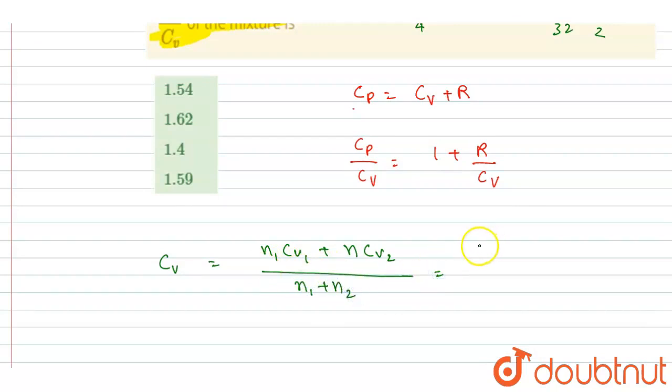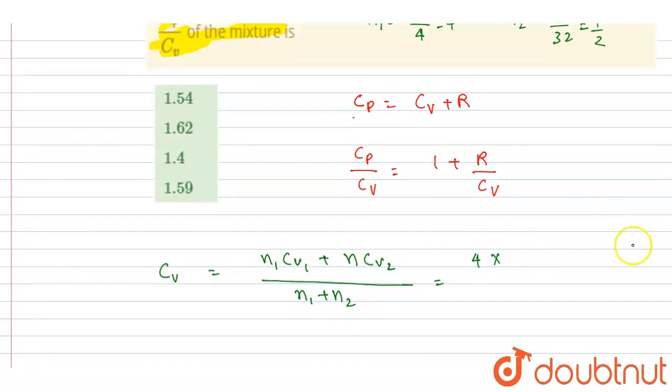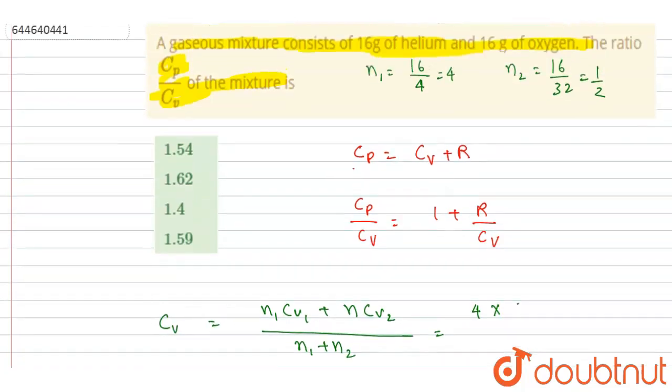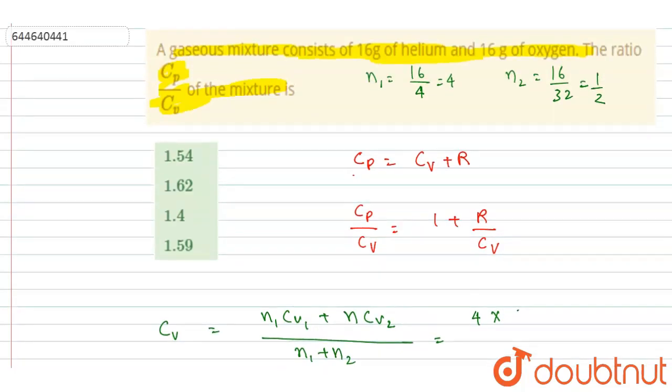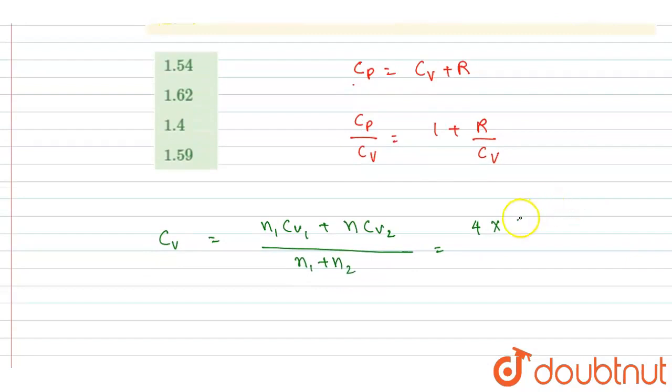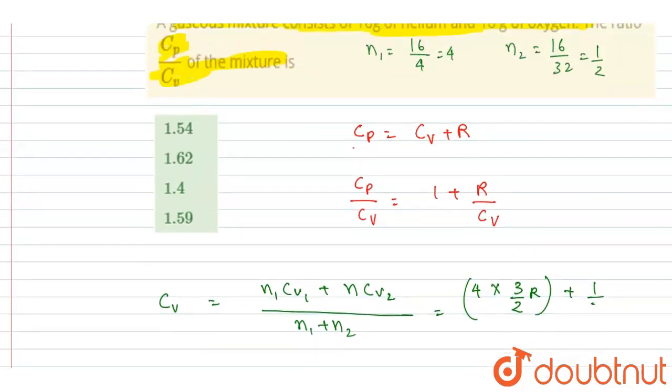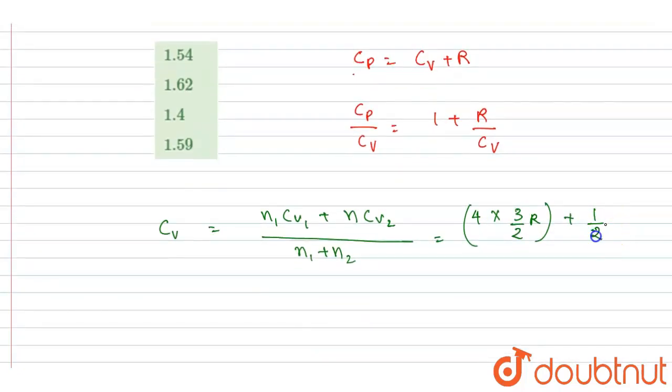Now if you put the values here, if you write down n1, it is 4. And we know already the monatomic gas has a Cv - if you see here, helium is a monatomic gas, so I will write 3 by 2 R. Plus half - if you see, oxygen gas is half mole - it will be 5 by 2 R.